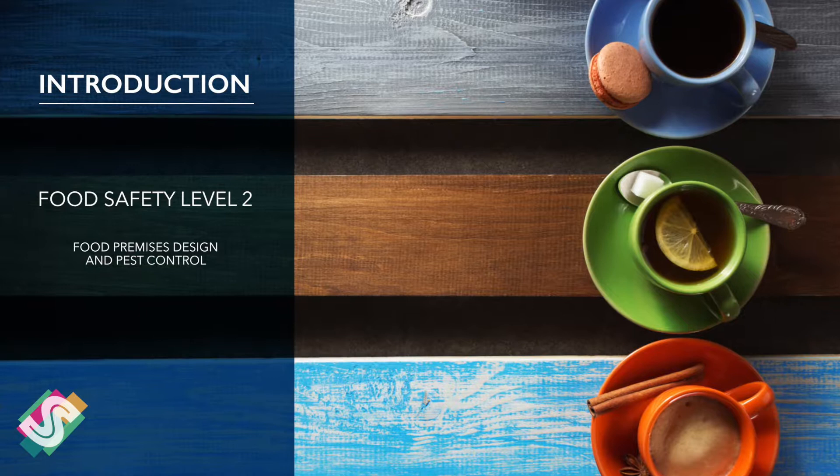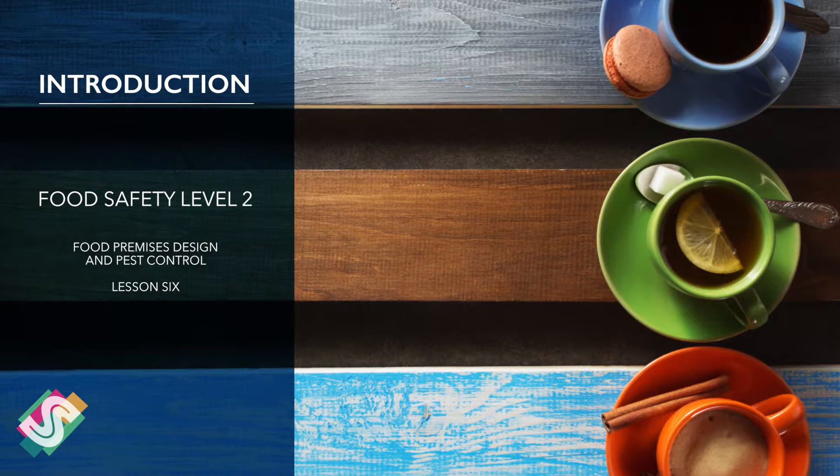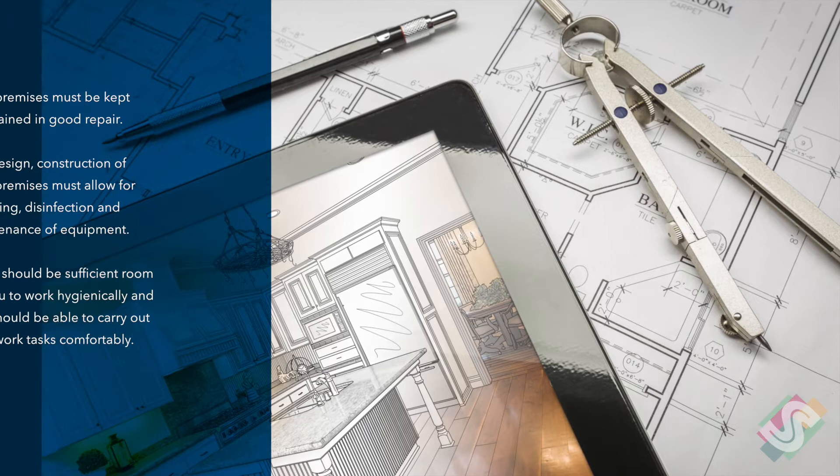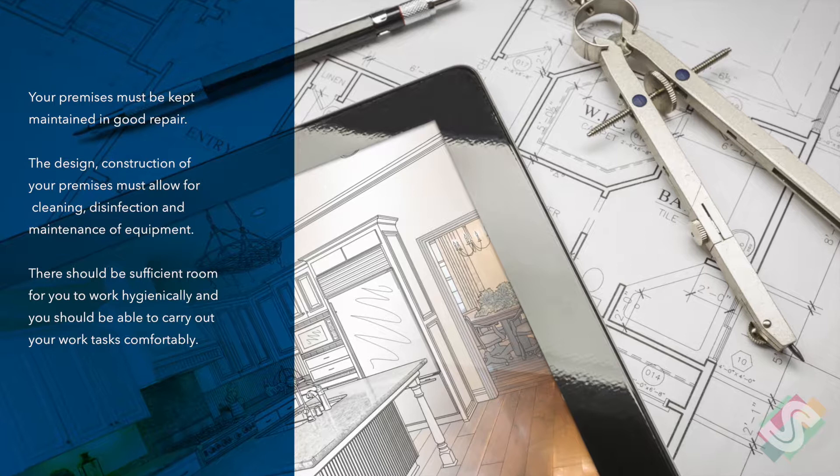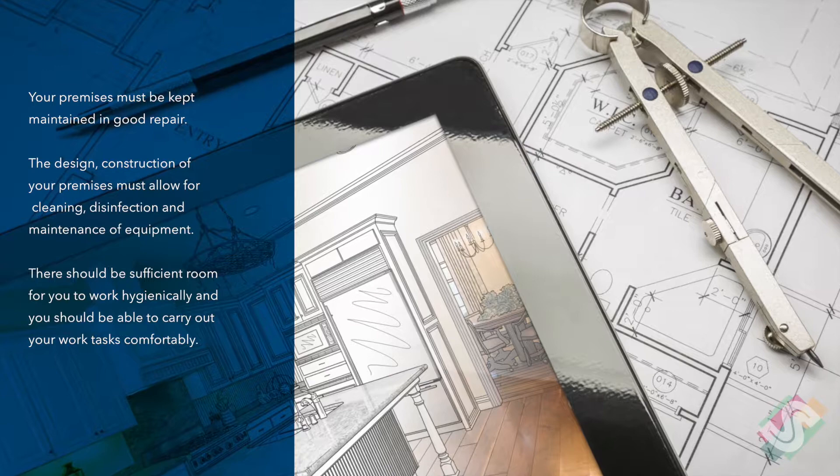Welcome to Food Safety Level 2, Food Premises Design and Pest Control, Lesson 6. Your premises must be kept maintained in good repair. The design and construction of your premises must allow for cleaning, disinfection and maintenance of equipment. There should be sufficient room for you to work hygienically, and you should be able to carry out your work tasks comfortably.